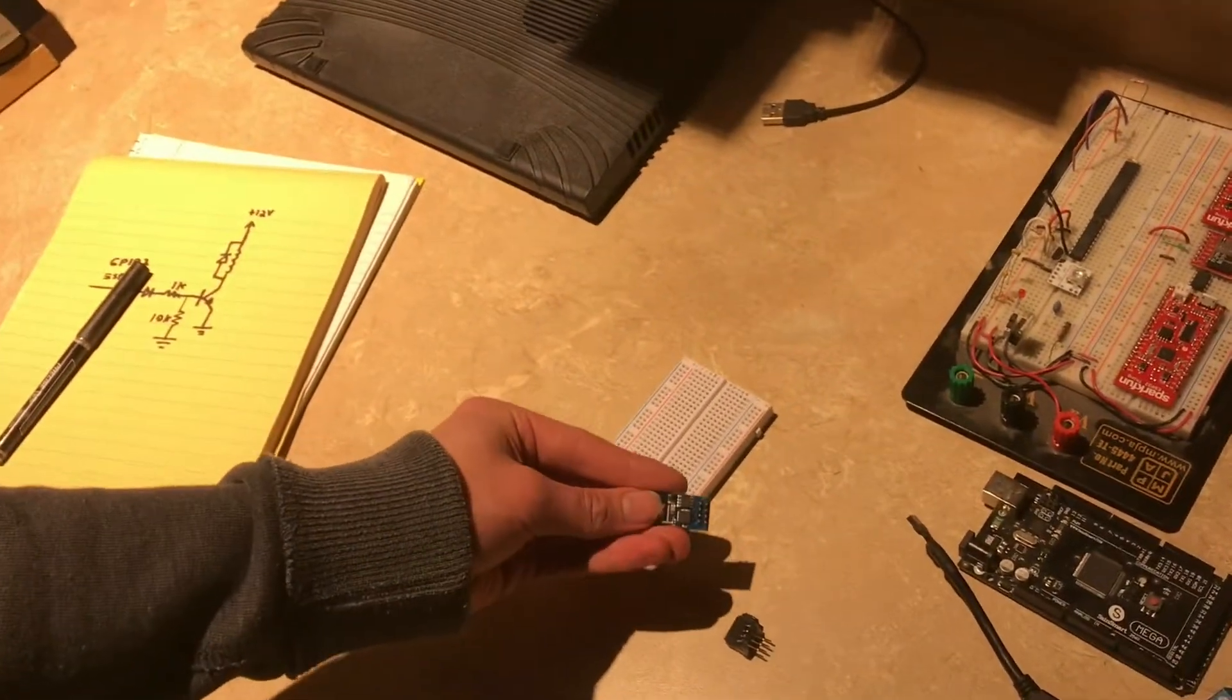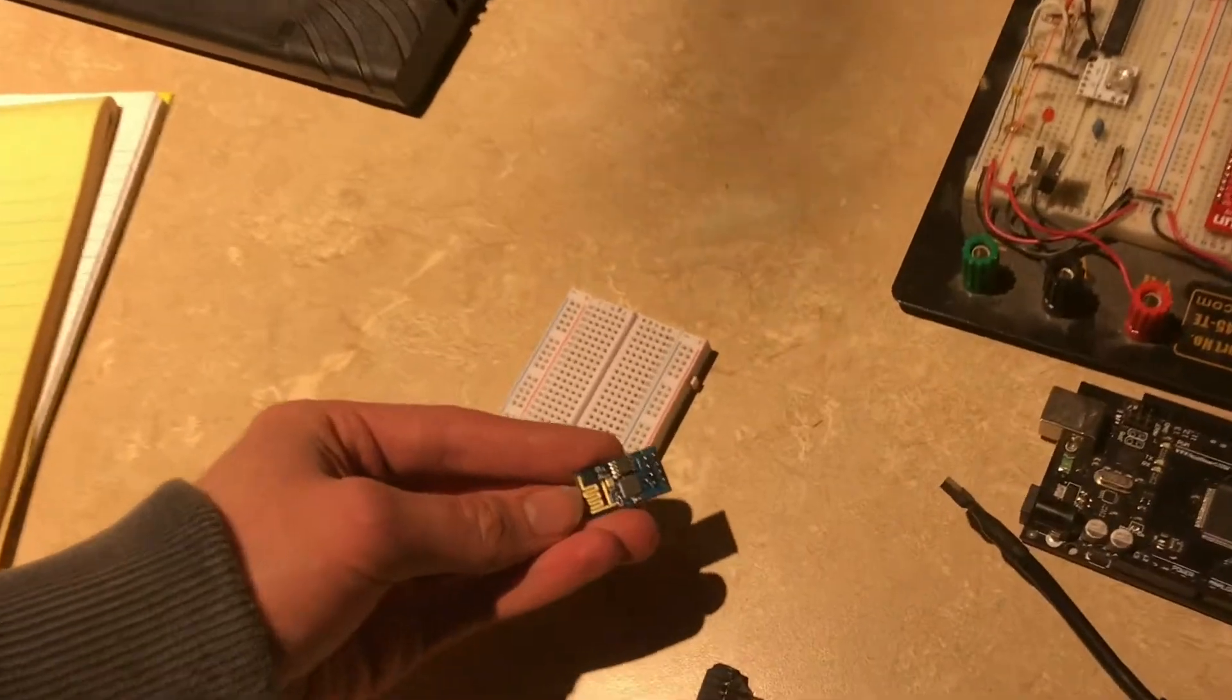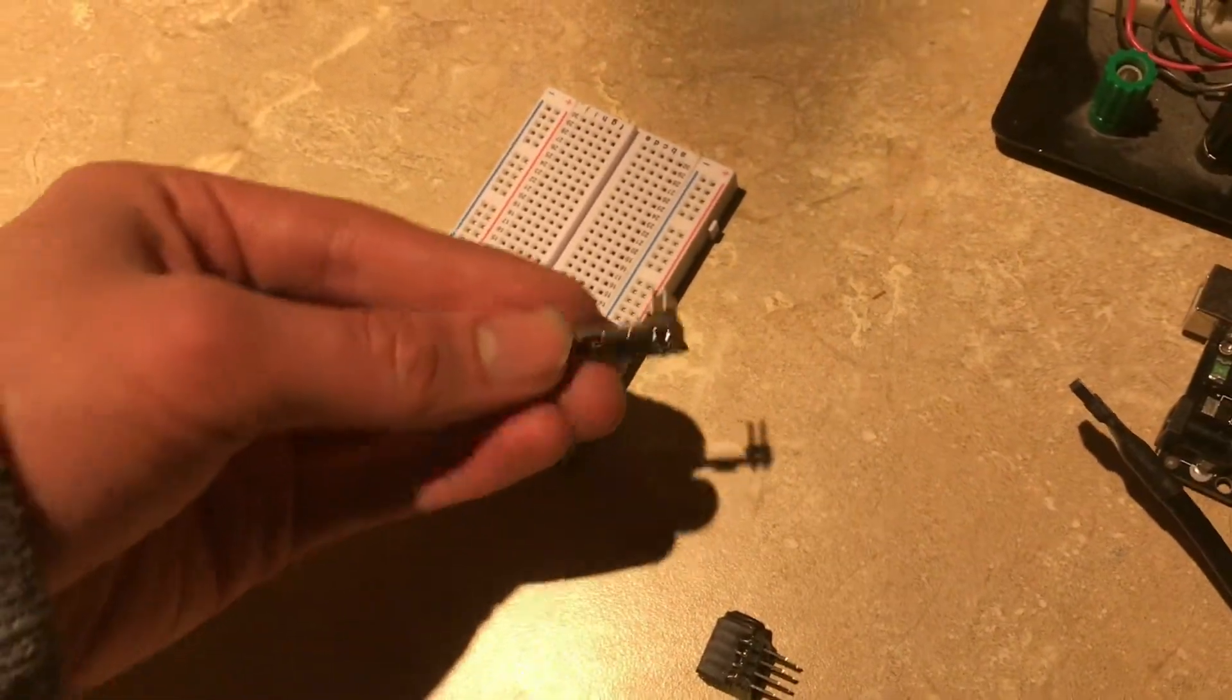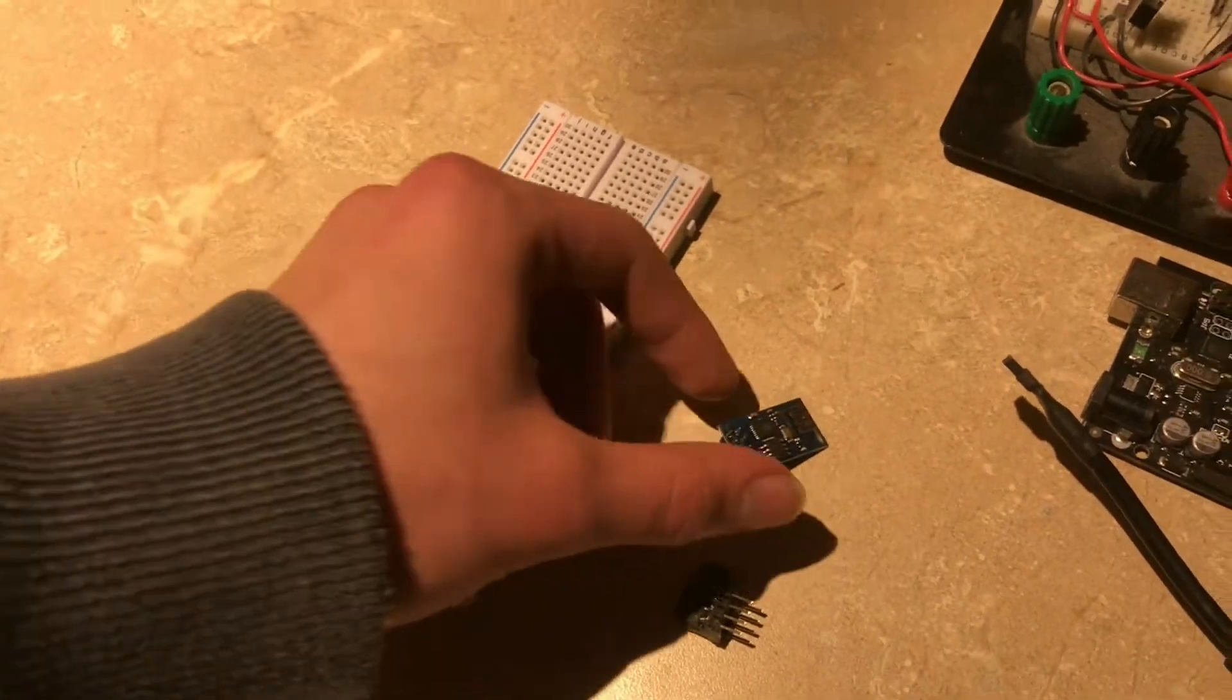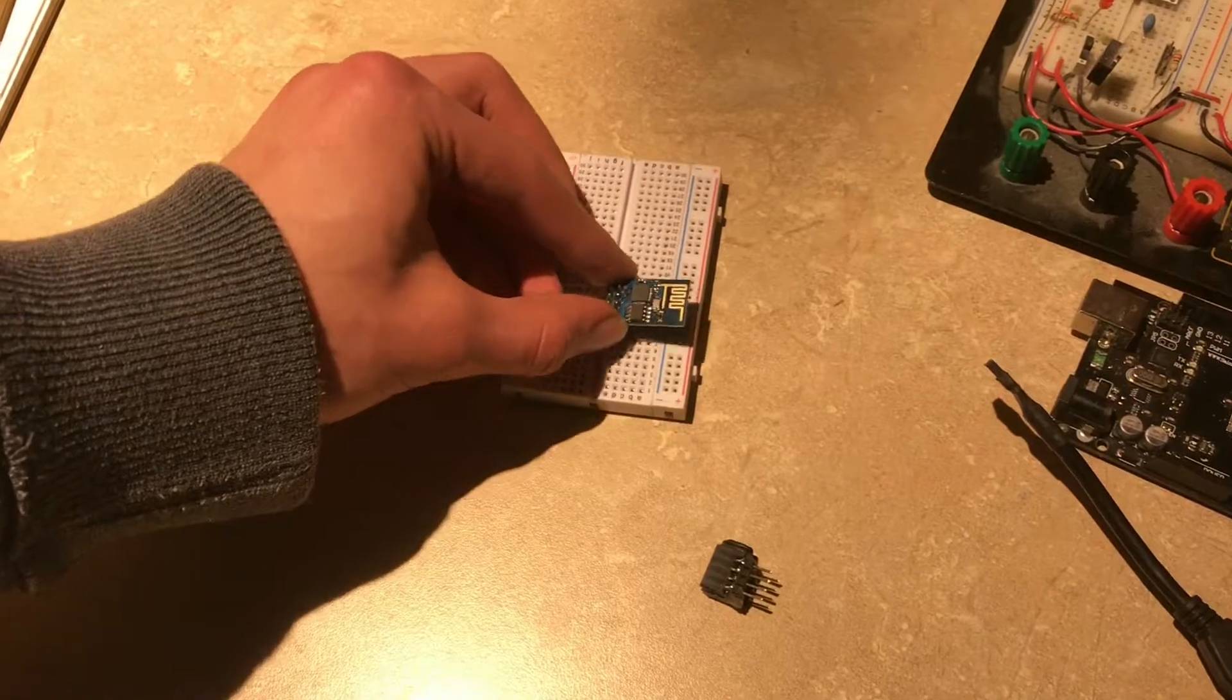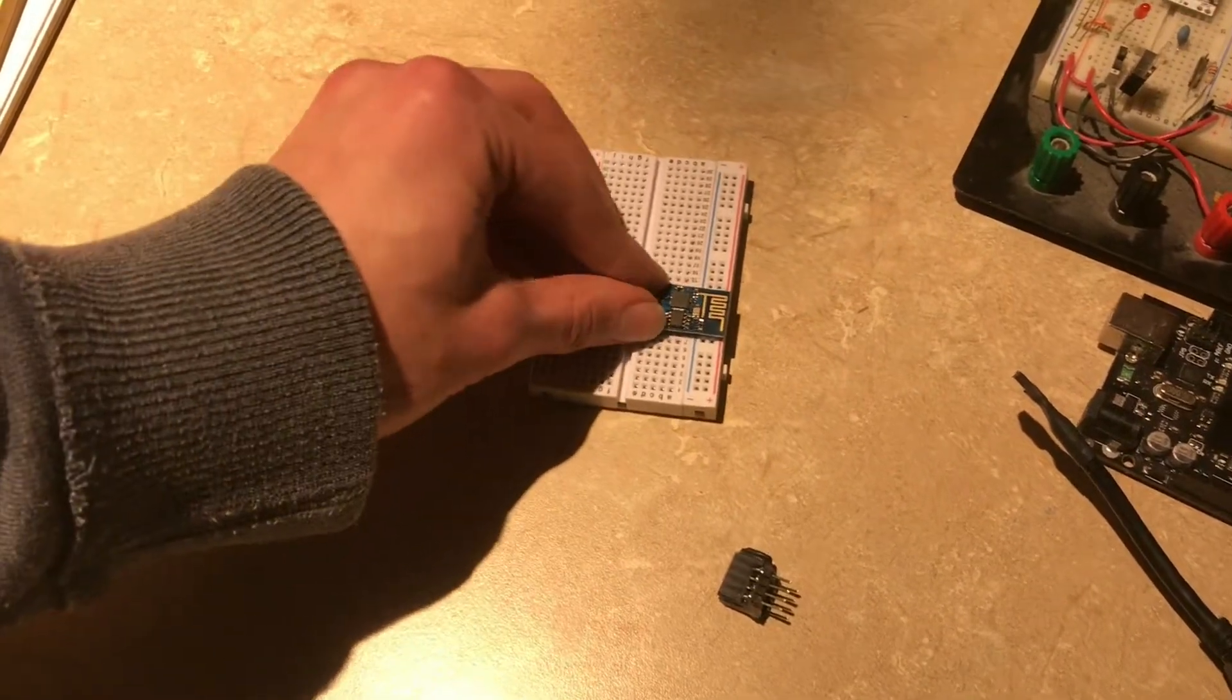These little ESP01 boards are a great way to add Wi-Fi to your project and they're so cheap. I love just about everything about them except that they don't go into a breadboard like you think. I mean sure you can pop it in like this but